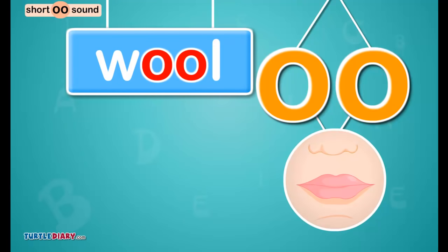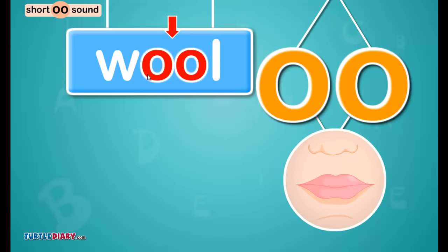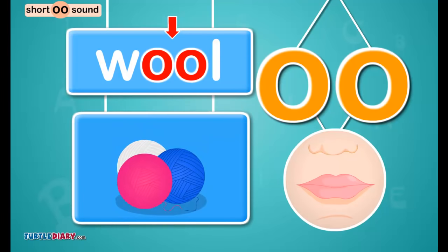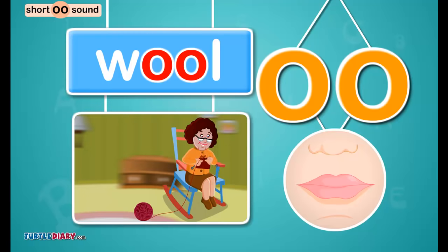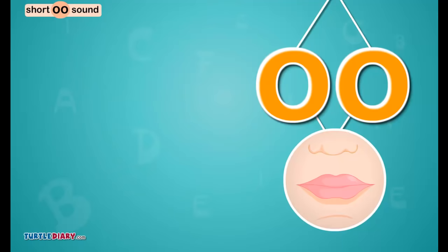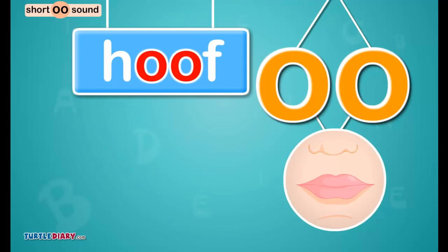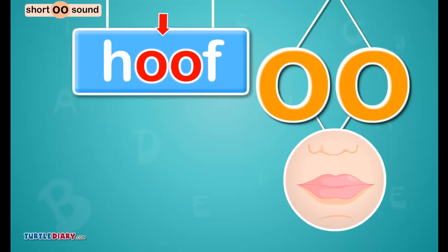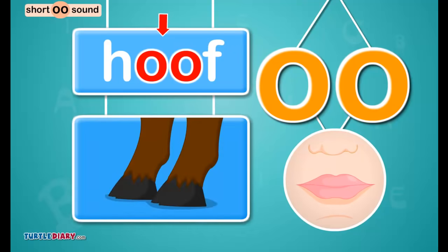Click on the letter that makes the ʊ sound. Look. Click on the letter that makes the ʊ sound. Hoof.